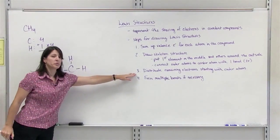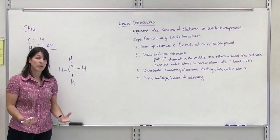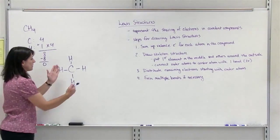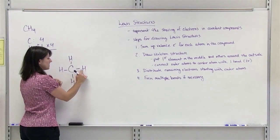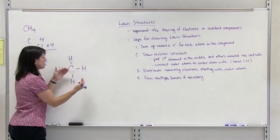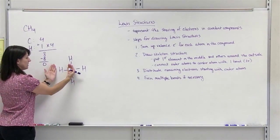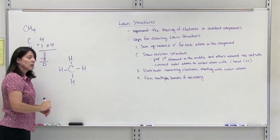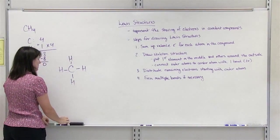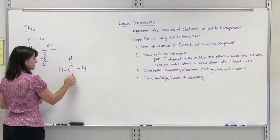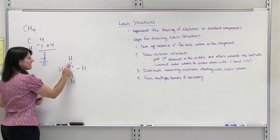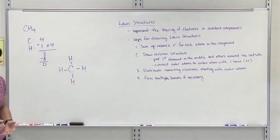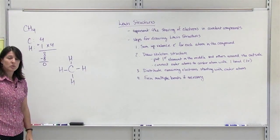We don't have any more to distribute, so we check and make sure that everybody has their full set of valence electrons. Hydrogen is an exception and only needs 2. Each hydrogen has 2 electrons because it's sharing them with carbon, so all the hydrogens are satisfied. The center carbon gets use of all the bonded electrons, so it has 2, 4, 6, 8 electrons around it — that's its full set. This is the complete Lewis structure for methane.